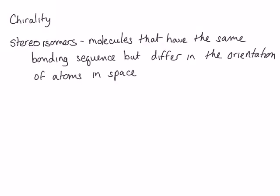The topic of this lecture will be chirality and what it means for a molecule to be chiral. Chiral molecules are stereoisomers. Stereoisomers are molecules that have the same bonding sequence but differ in the orientation of their atoms in space. The type of stereoisomer we talked about previously are geometric or cis-trans isomers, which differ in orientation due to no rotation around a double bond or around single bonds in a ring.